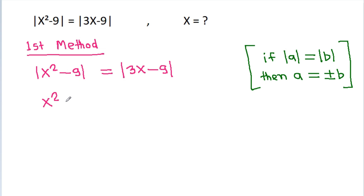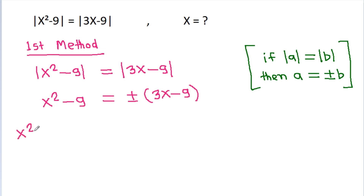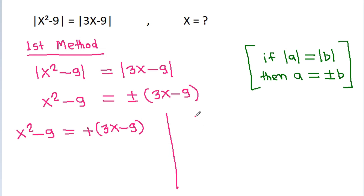So here, x² - 9 will be equal to ±(3x - 9). That gives us two cases: x² - 9 = 3x - 9, and x² - 9 = -(3x - 9).